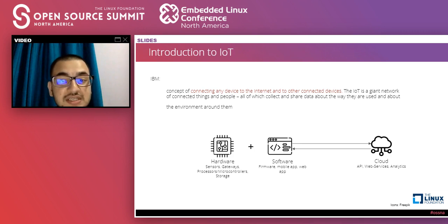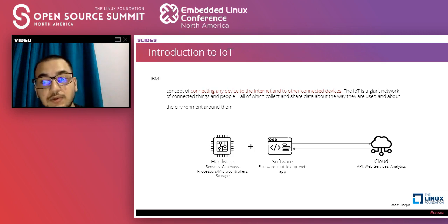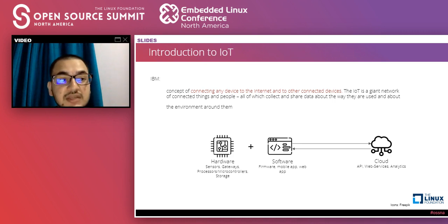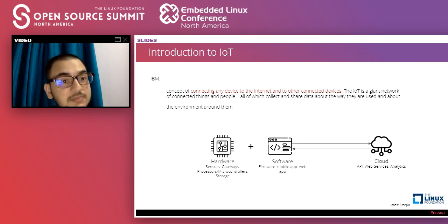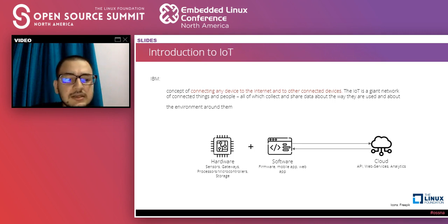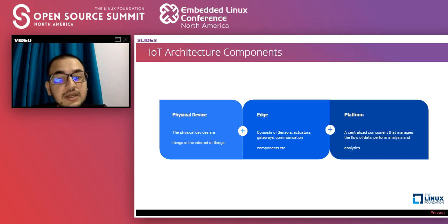An IoT device can be any device connected to the internet, irrespective of computation power, price, or size. At a high level, IoT consists of hardware, software, and cloud. Hardware may include sensors, a processing unit, embedded CPU or microcontroller, and storage. Software may contain firmware, mobile application, and web application. Most of the time there is bi-directional network communication, and devices may interact using protocols like Bluetooth Low Energy or ZigBee.